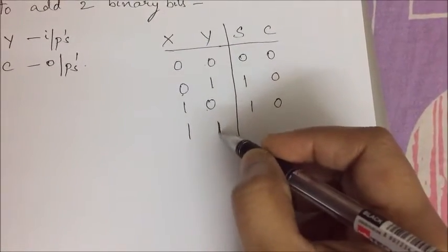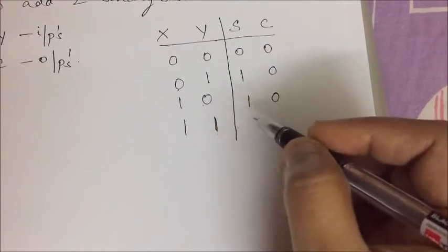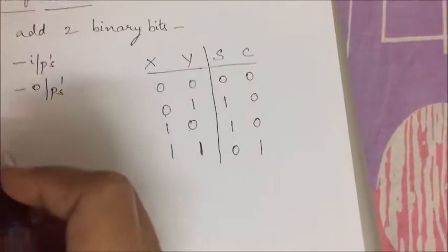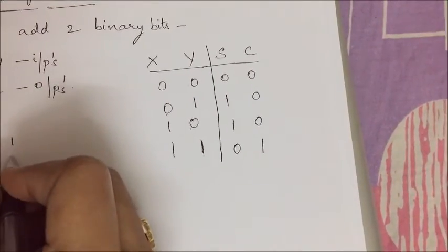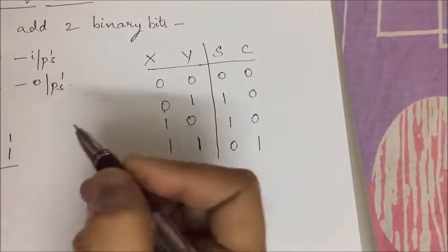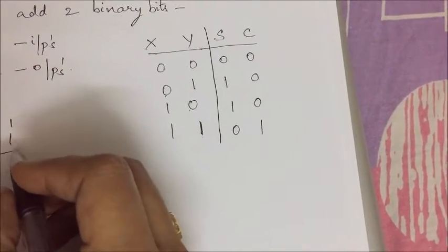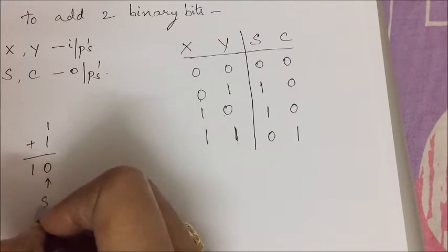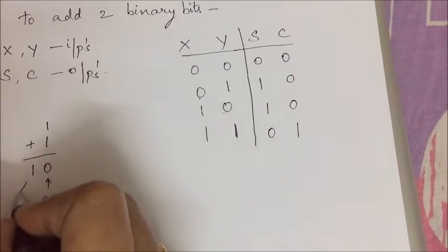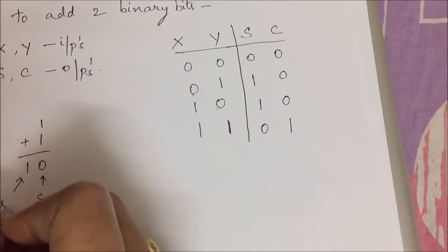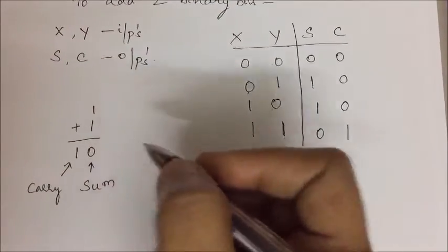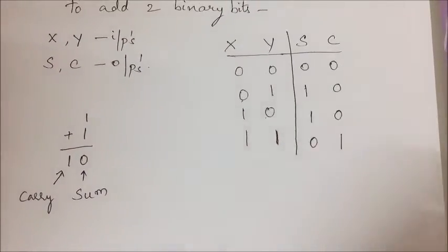When both are 1, it is 1 plus 1, sum will be 0 and carry will be 1. This is simple addition. 1 plus 1 equals 2. 2 in binary is 10. So this 0 is the sum and this 1 is the carry. Any combination if we are seeing like this we can get this truth table very easily.